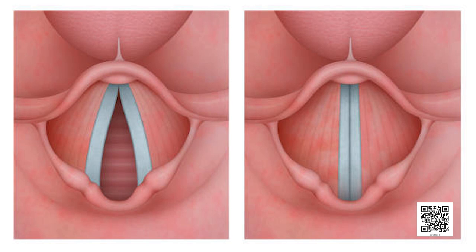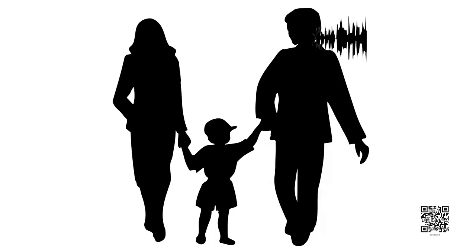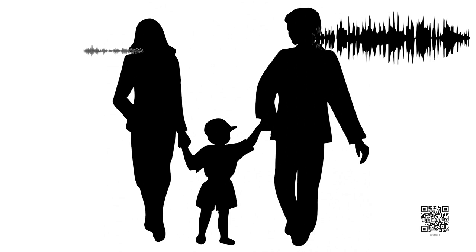Do you know that different people have different voices, and that depends on the working of our vocal cords? If the vocal cords are thick, there is a production of a different sound. If they are thin, there is a thin passage of air and a completely different sound. You must always be thinking about why your father has a different voice, why your mother has a different voice, why you have a different voice. The answer lies in the working of your vocal cords.